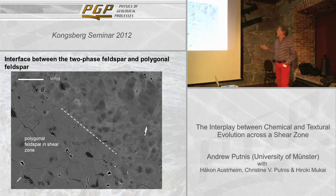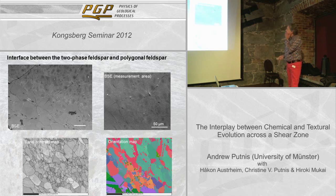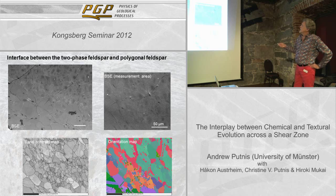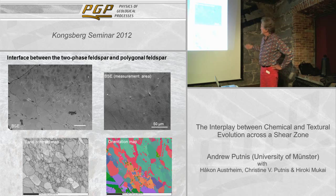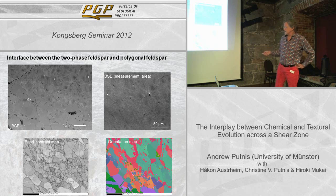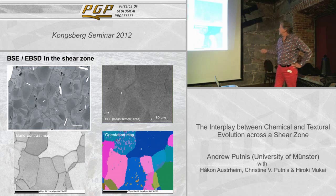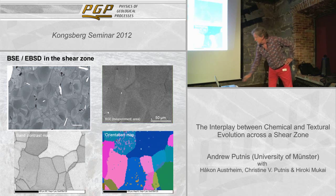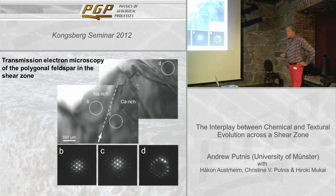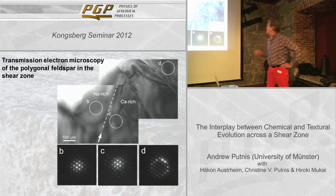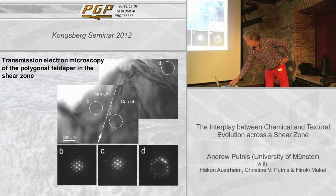If we look at an interface between this polygonal texture and our previous complex two-phase feldspar, we actually see that in this mini shear zone we preserve some of this zonation. Now, it's still a bit mysterious to me how we go from one to the other. If we do EBSD on all of this and look at the orientation of lots of grains here — we see the interface between this two-phase material and the shear zone — we go from sub-grains to a rather coarser texture which now seems to have rather more different colours in the orientation map. If we do all the pole figures for all of this stuff...